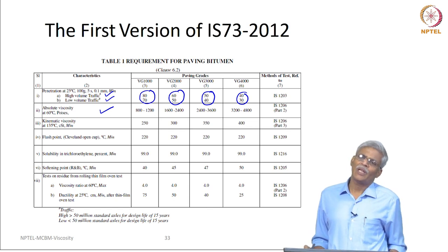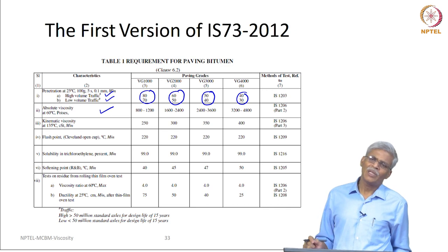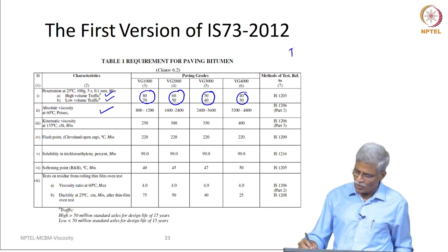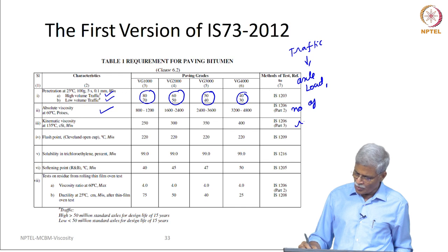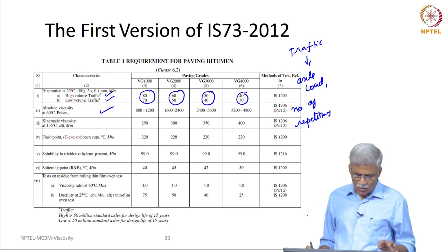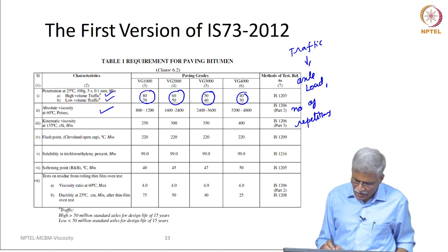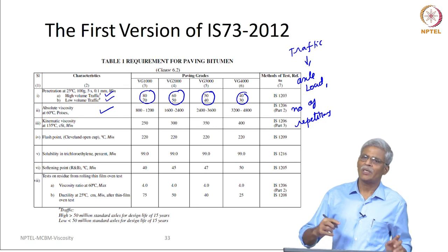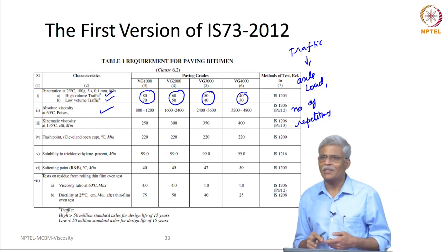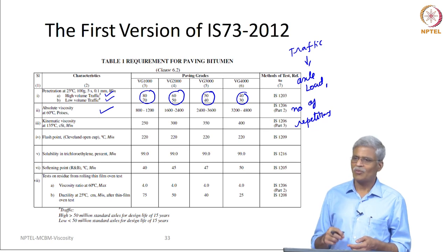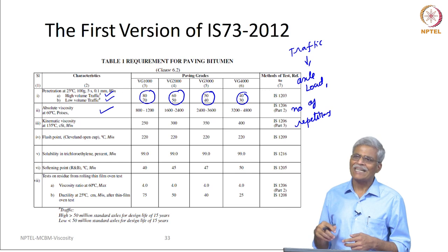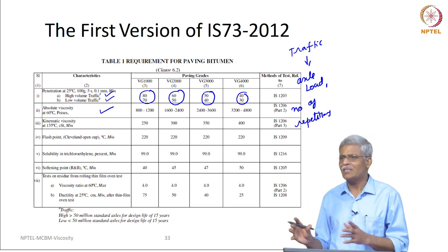Why did we do that? If you recollect the discussion on fatigue, it is not only because of having a stiff binder — it is also related to traffic, in terms of axial load as well as the number of repetitions. We wanted to keep a slightly lower penetration for low volume traffic and a slightly higher penetration for high volume traffic. Please do not try to directly relate high penetration with better fatigue response. The idea is a higher penetration material is softer at 25 degree centigrade and the tendency to crack is likely to be less — this is basically a consistency-based parameter.